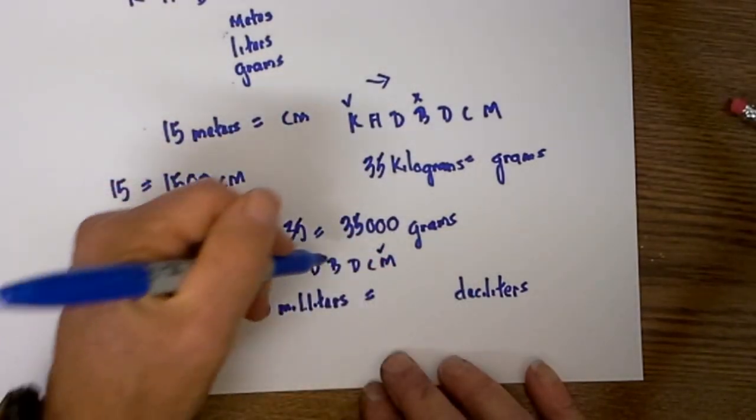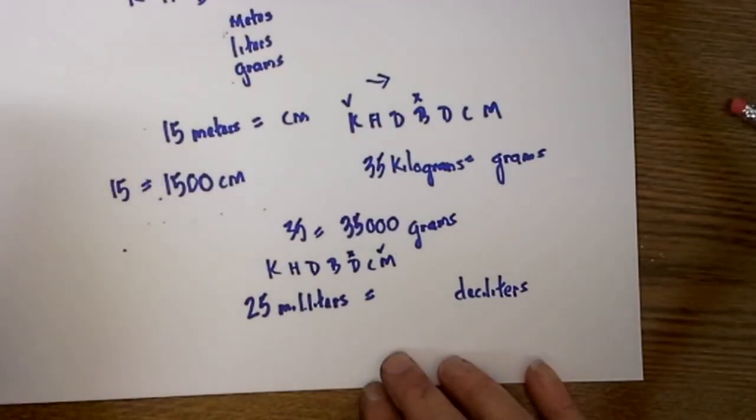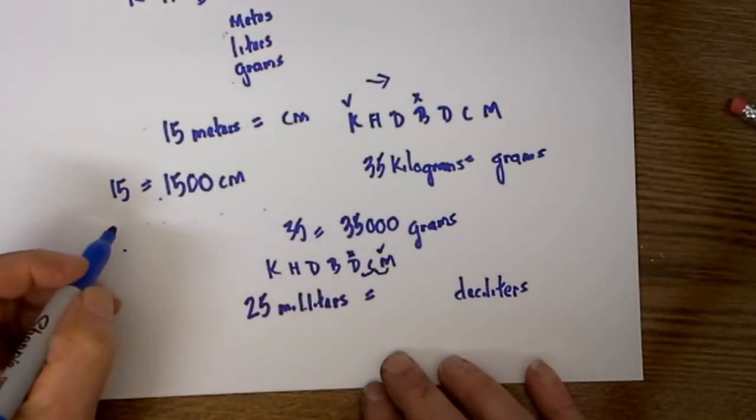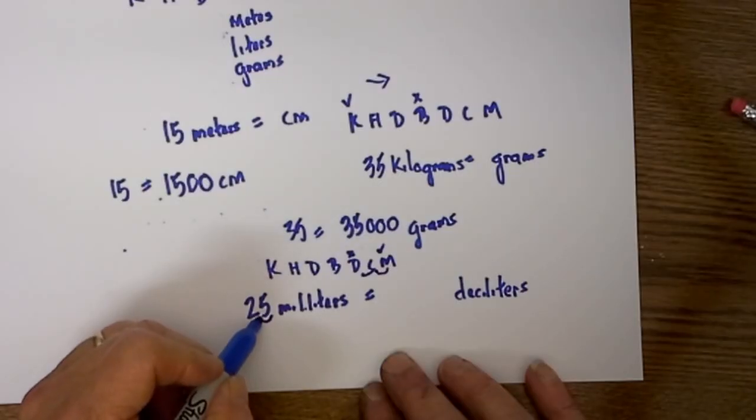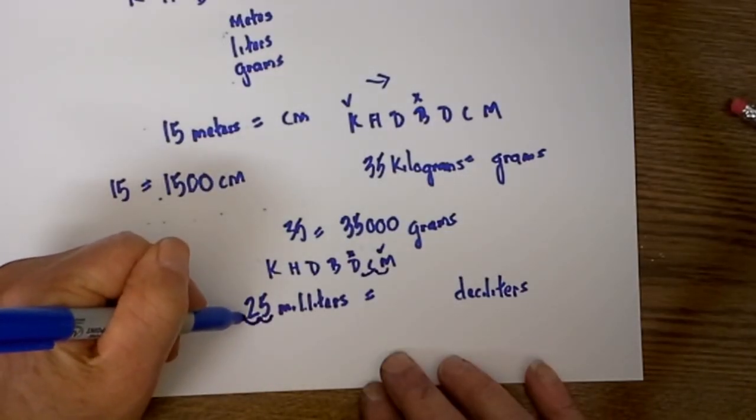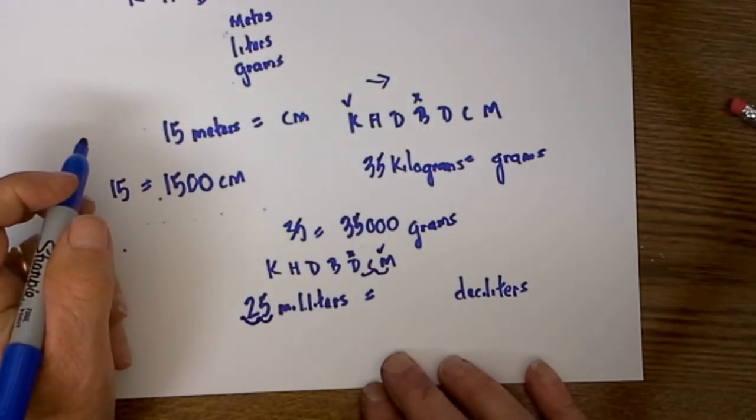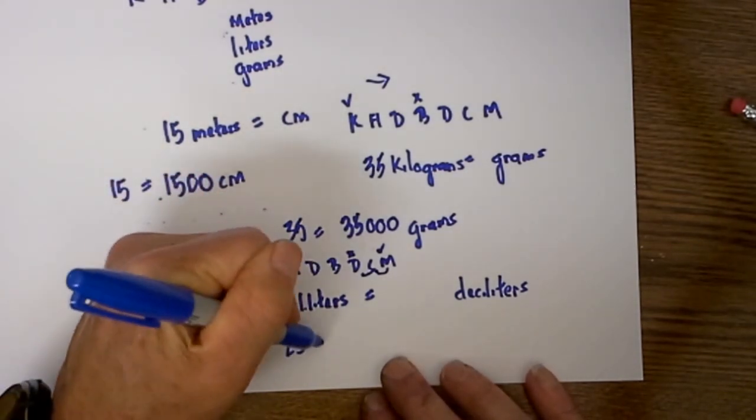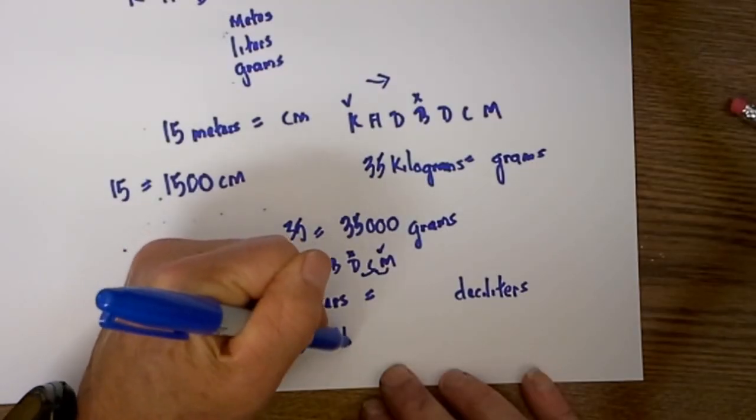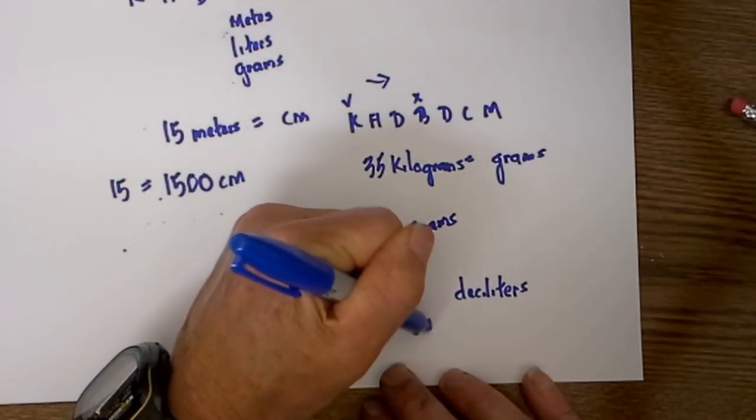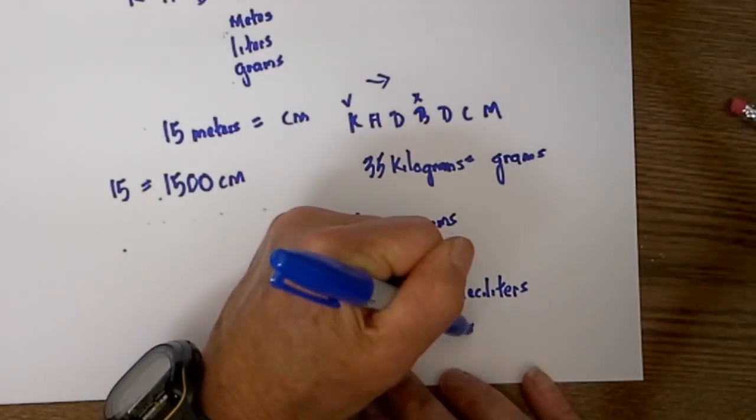We are going to Deci's, x marks the spot, I am going 1, 2 directions to the left. So I will go 1, 2, so that will be 0.25, so 25 milliliters is equal to 0.25 deciliters.